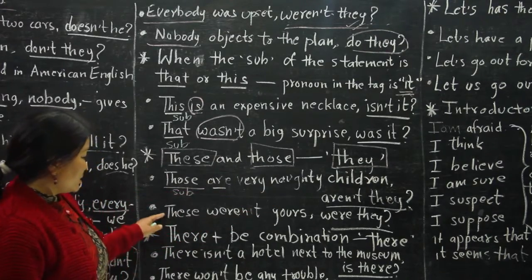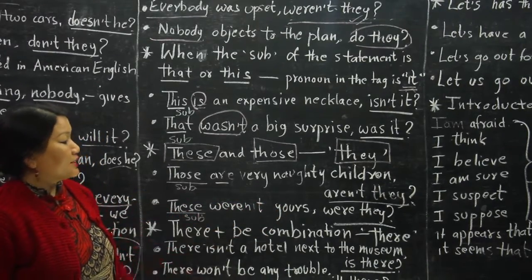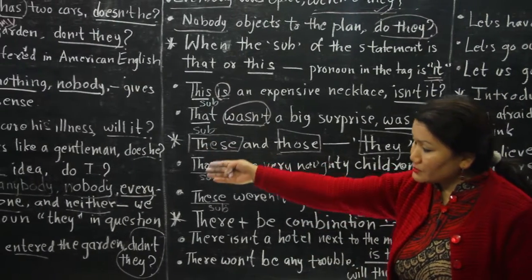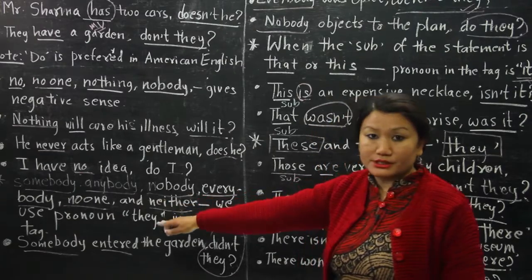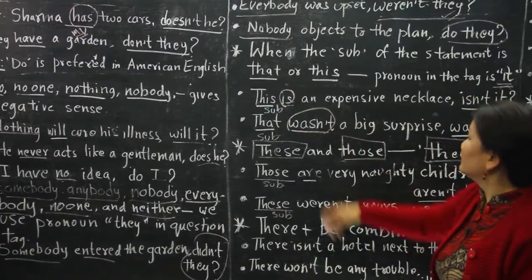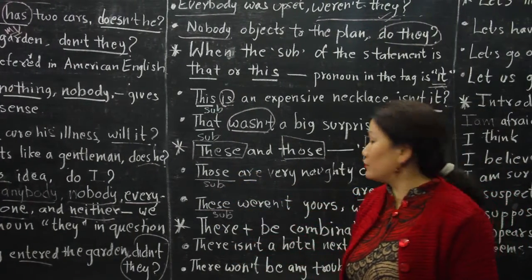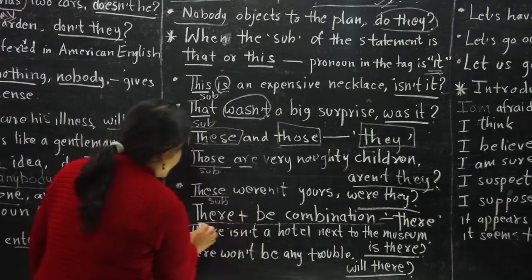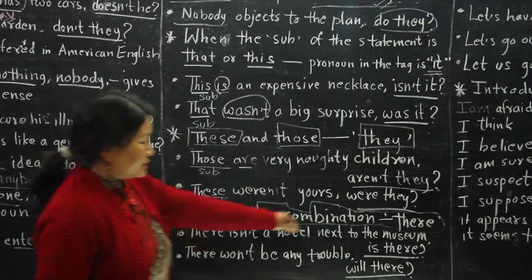When the statement is 'I am,' the tag uses 'aren't I' — 'am I' is grammatically unusual. 'I am your father, aren't I?' 'I am a bit late, aren't I?' 'I am a teacher, aren't I?' Introductory phrases like 'I am afraid,' 'I think,' 'I believe,' 'I suppose,' 'I hope,' 'It appears that,' and 'It seems that' do not affect question tags except for the transfer of negation. For example: 'I suppose you are not serious, are you?' 'I think my mom returned home, didn't she?' 'It appears that she is enjoying herself, isn't she?'